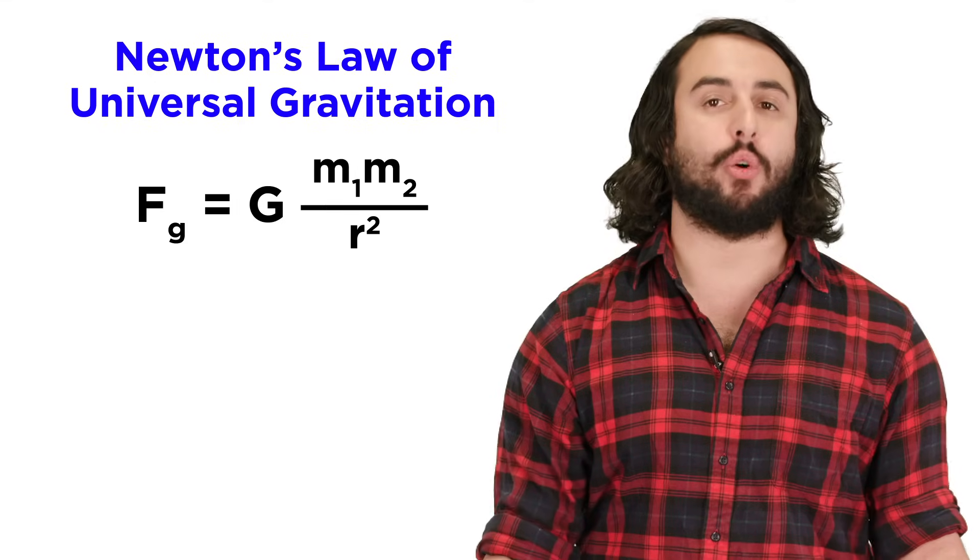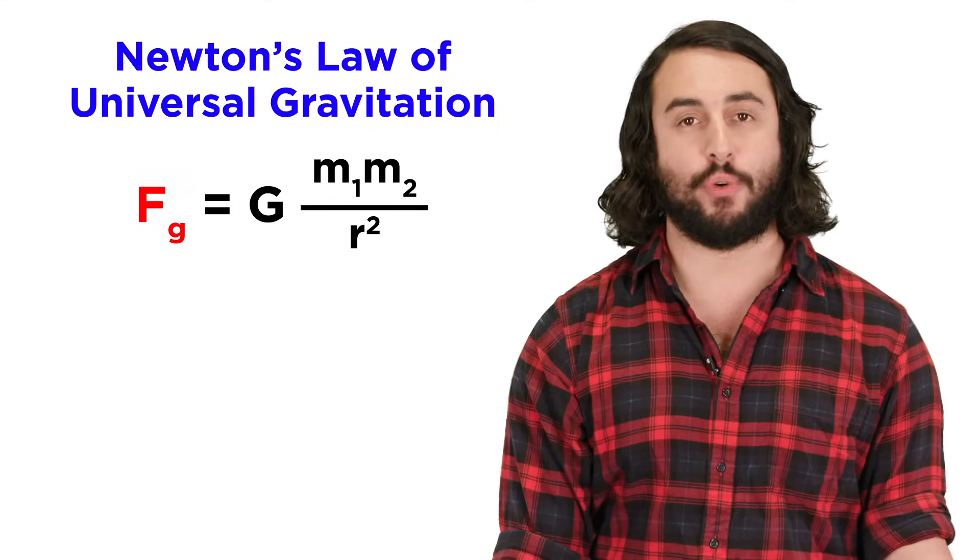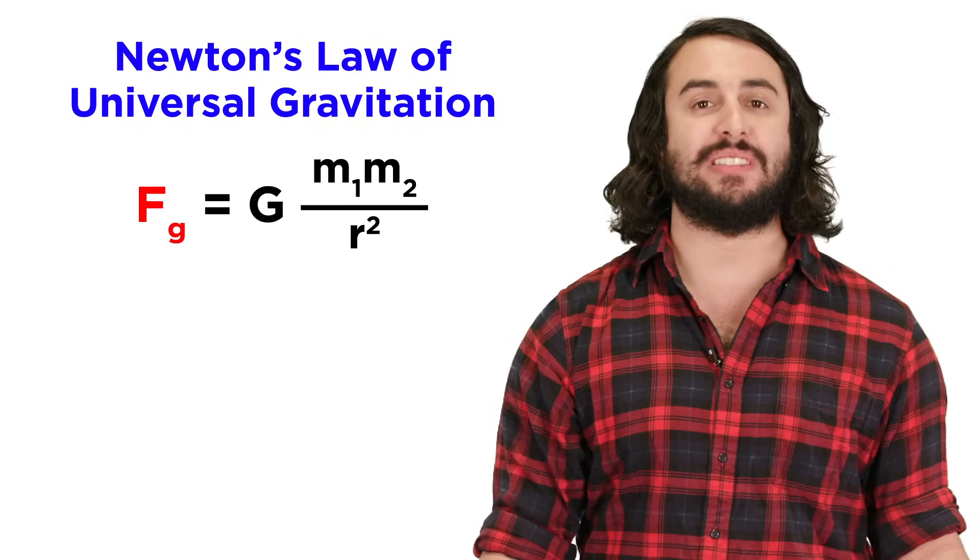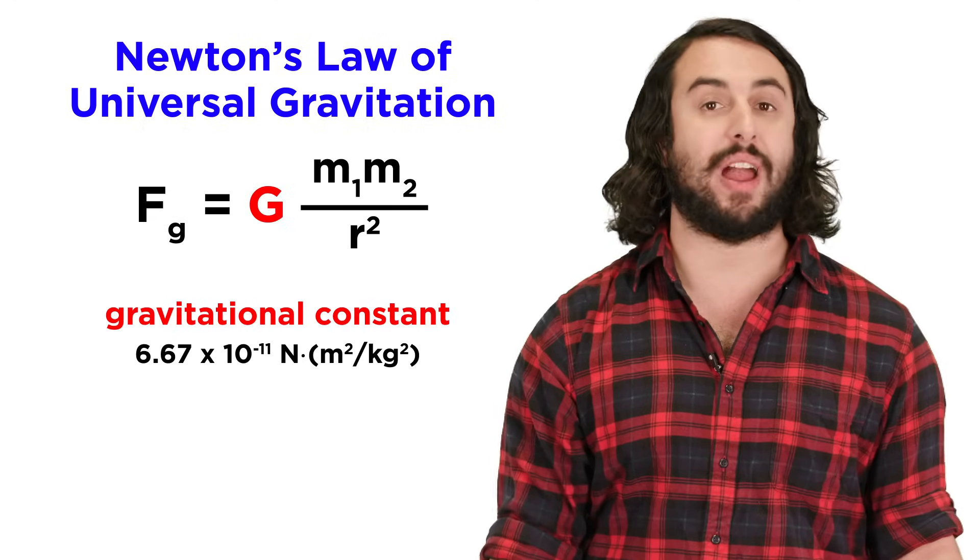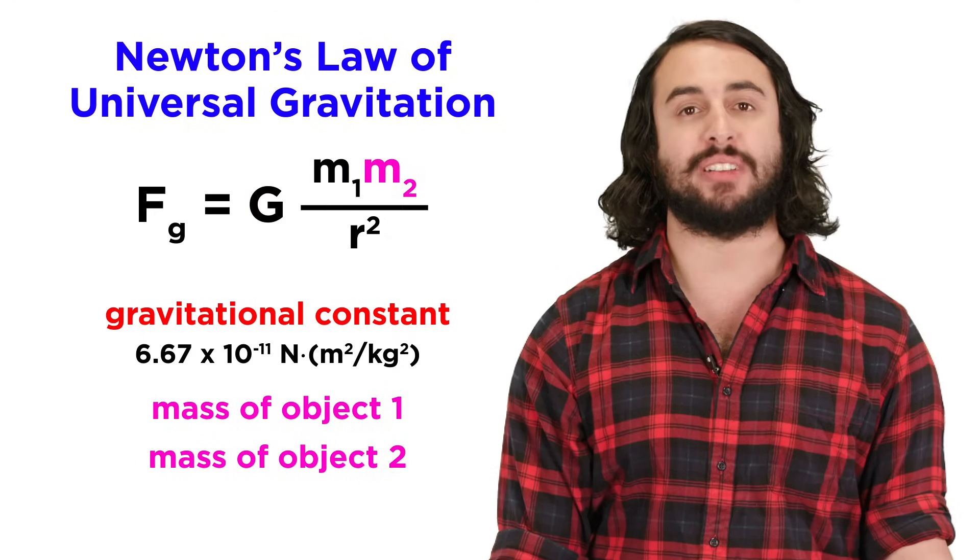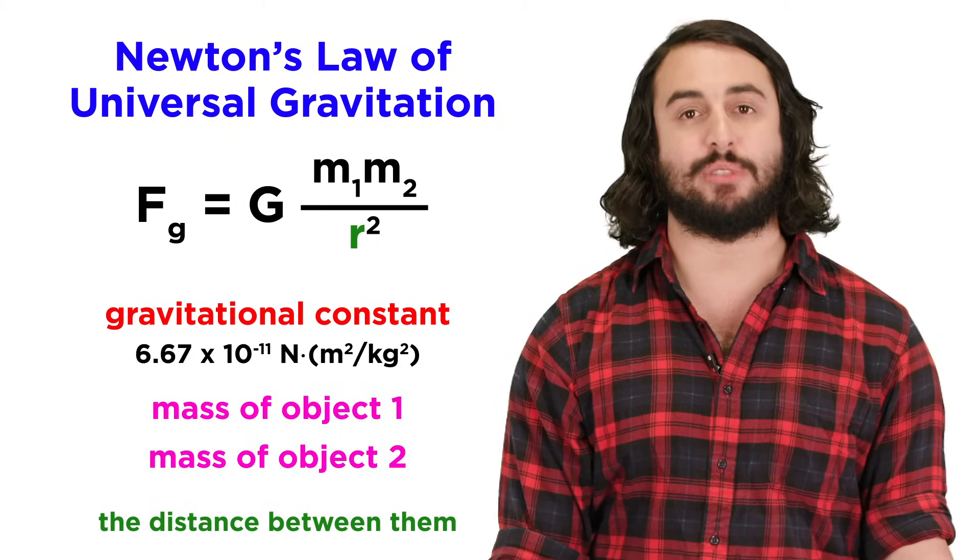Newton developed an equation to quantify the magnitude of the gravitational force between two objects, and it looks like this, where F is equal to the constant of universal gravitation G, times the mass of the first object, times the mass of the second object, divided by the distance between them squared.